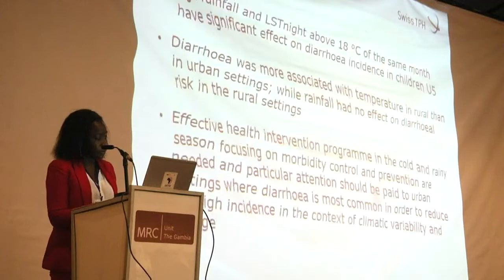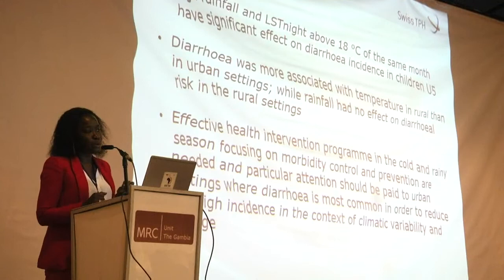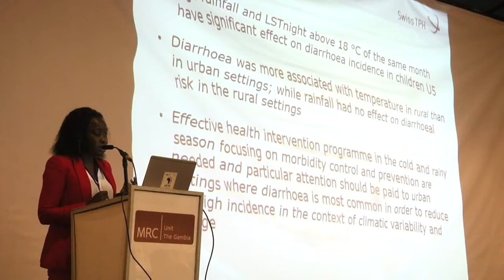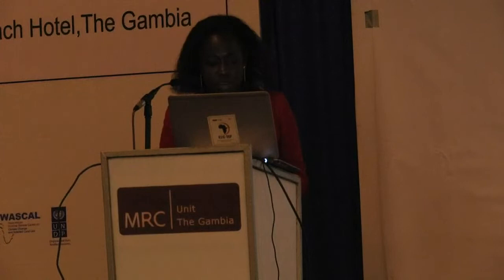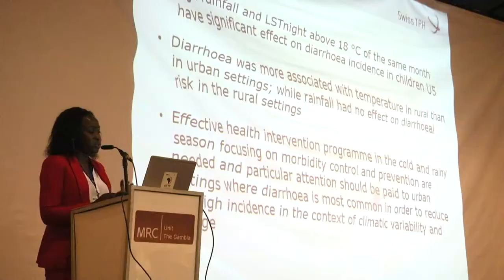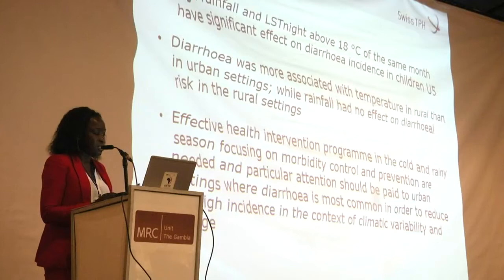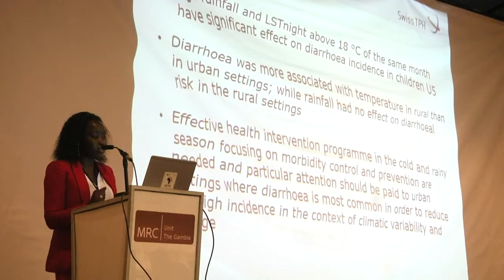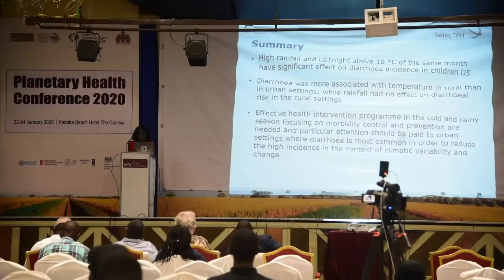In both settings, diarrheal disease was positively associated with average temperature above 24°C in the current month, and high rainfall had a significant positive effect on diarrheal disease in urban areas. High rainfall and high temperature — including night temperature — were significantly associated with diarrheal disease incidence in children in Mbour. Effective health intervention programs in the cold dry season and rainy season focusing on morbidity control and prevention are needed, with particular attention to urban areas.